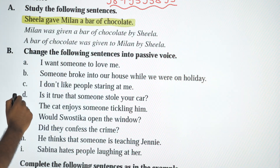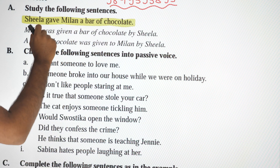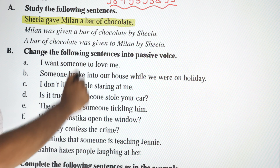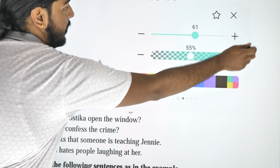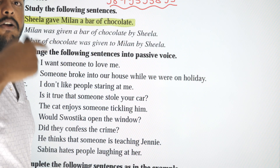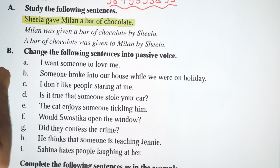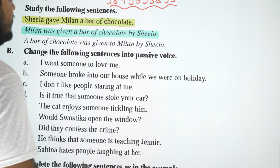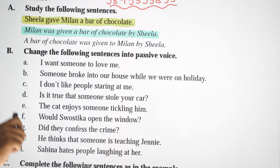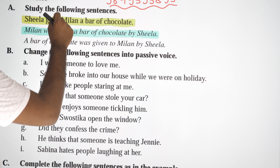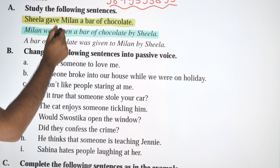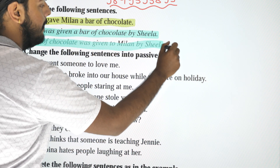Let me give you an example. Active: 'Silla gave Milan a bar of chocolate.' Here Milan is the indirect object. To convert to passive with Milan as subject: 'Milan was given a bar of chocolate by Silla.' Alternatively, making 'a bar of chocolate' the subject: 'A bar of chocolate was given to Milan by Silla.'